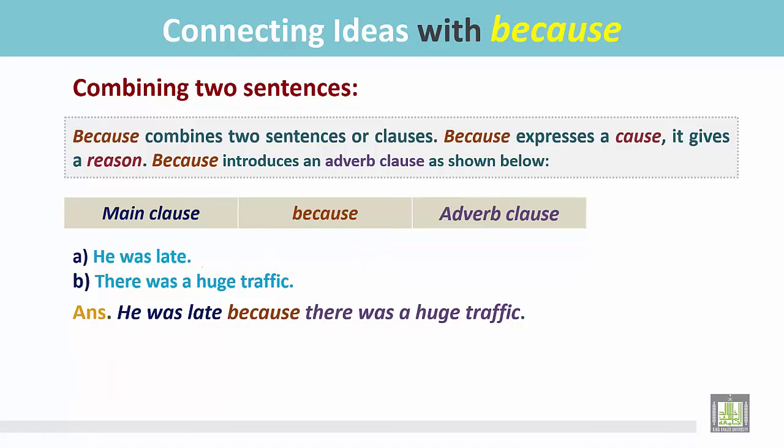These two sentences are joined this way. First, we write the main clause: He was late. We use conjunction because. And then the adverb clause or the reason: There was a huge traffic. We do not change anything in these two sentences. Just we write the first sentence here. Then we add the conjunction because. And after that, we write the cause or the adverb clause.